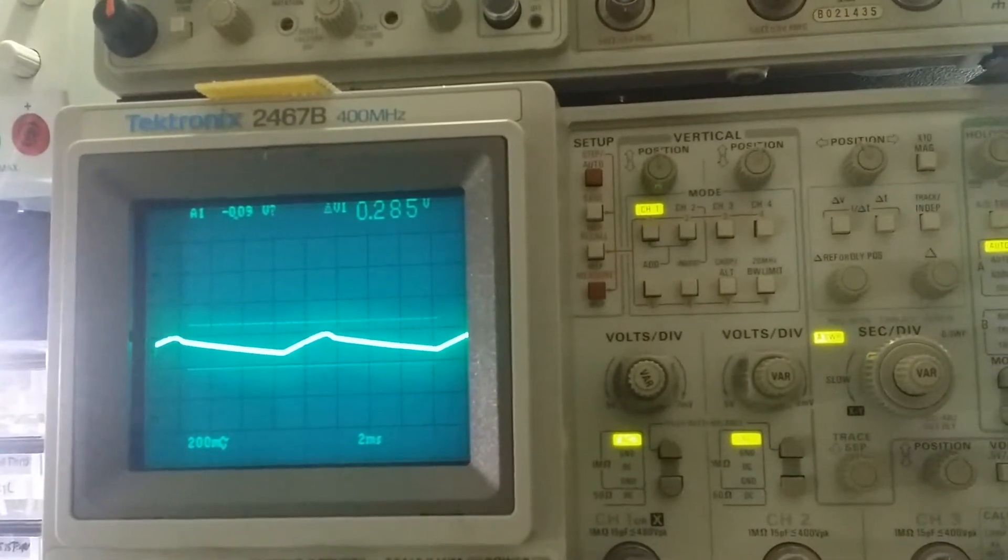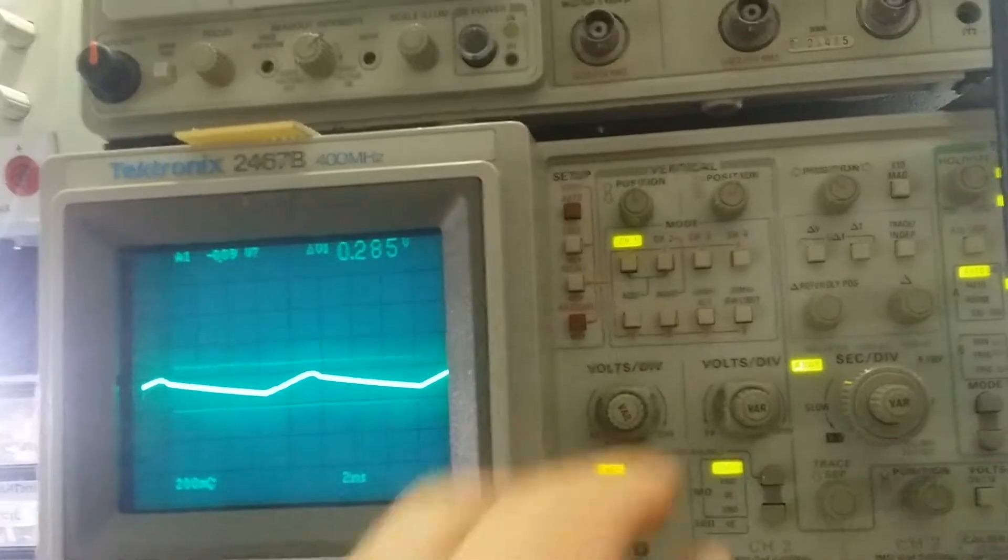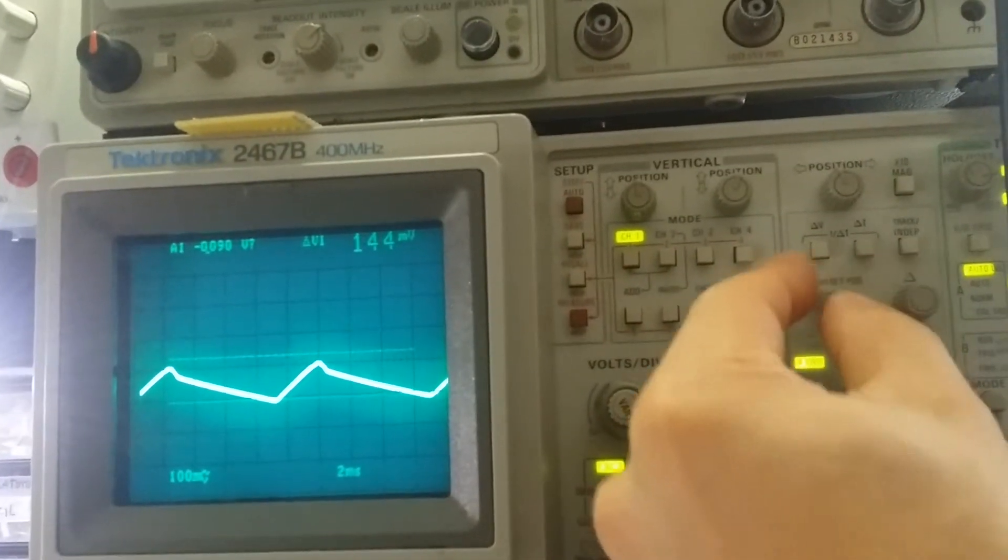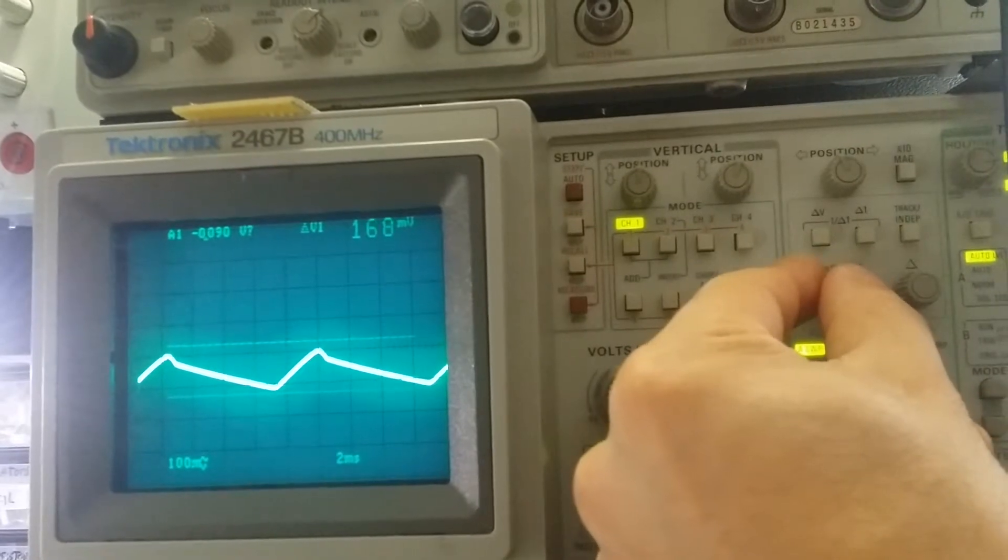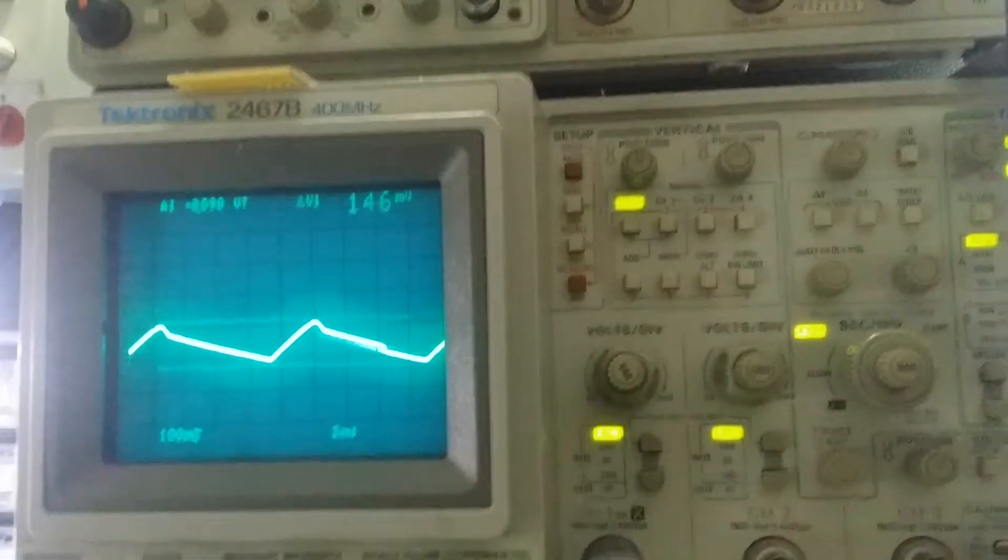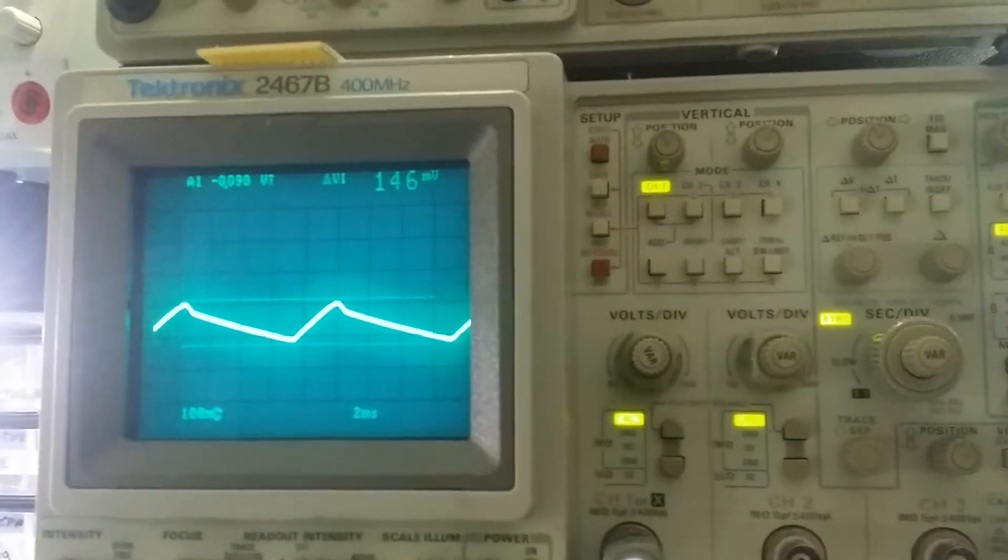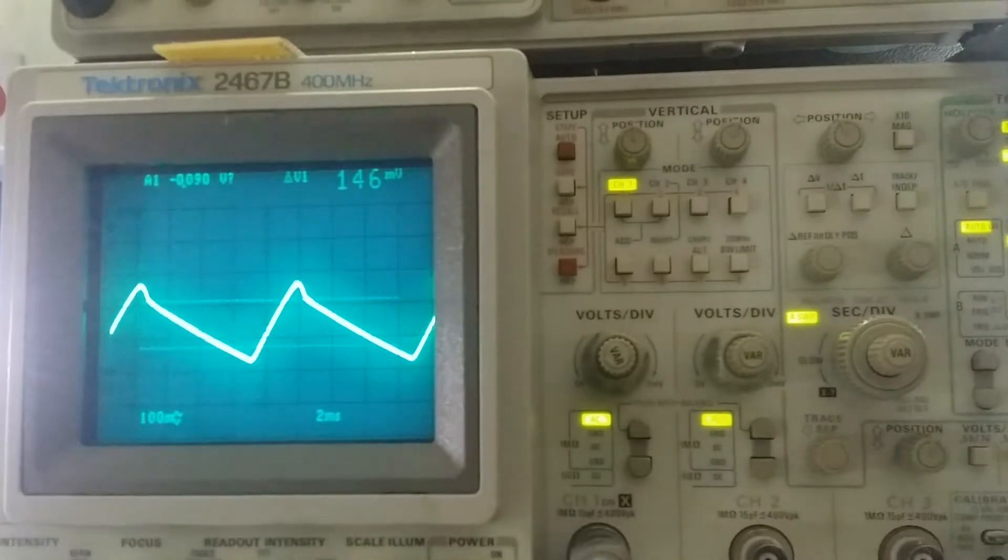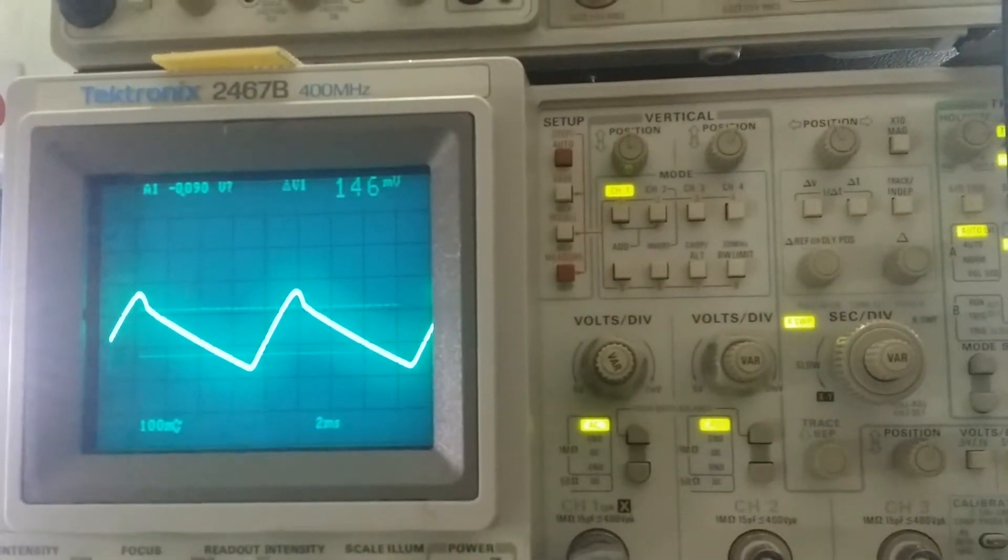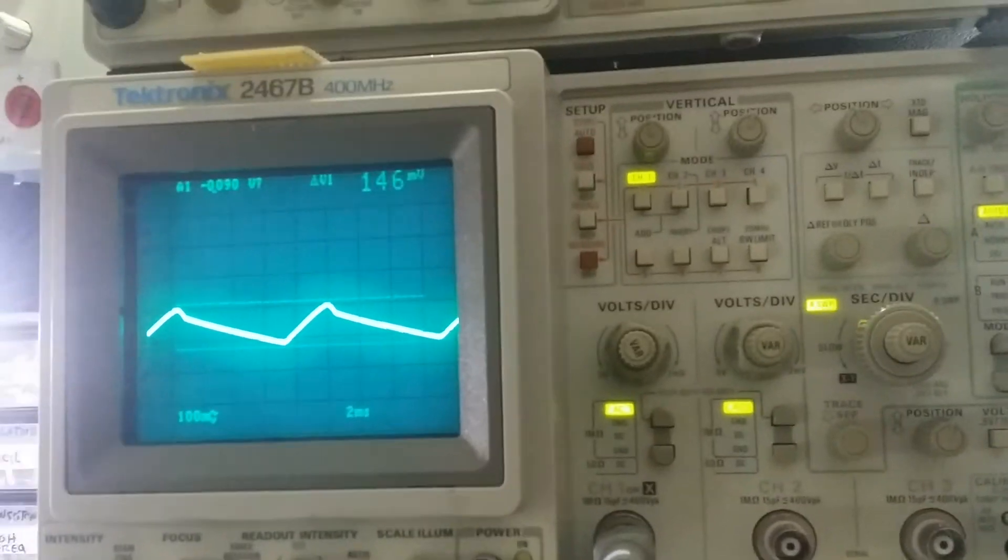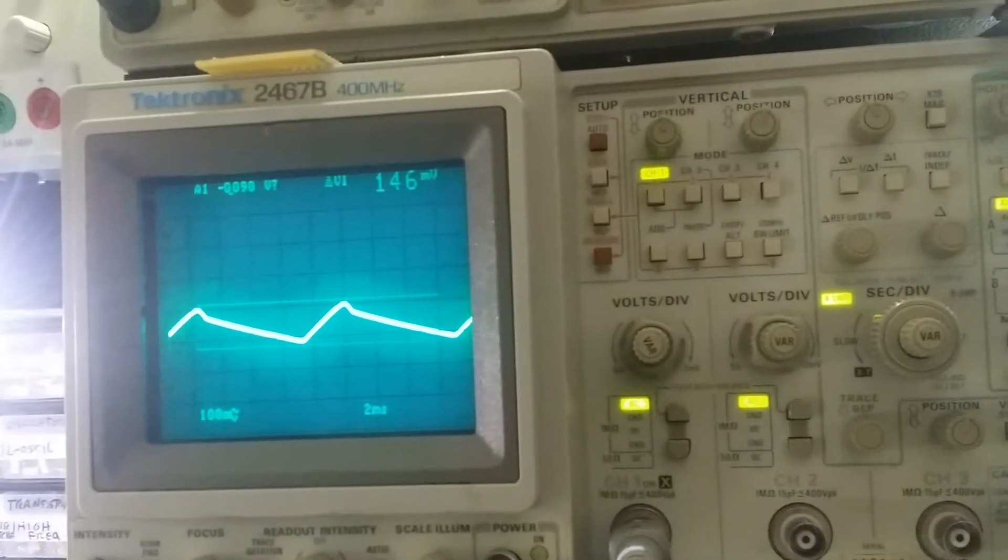If I introduce another capacitor into my circuit, as you can see here, we are on 146 millivolts. So introducing another capacitor, from 245 millivolts that it was before, we got 146. So it does help a lot. This is one amp.